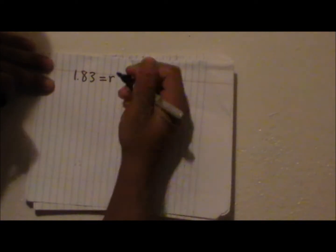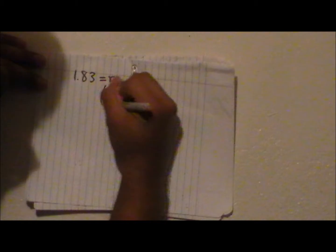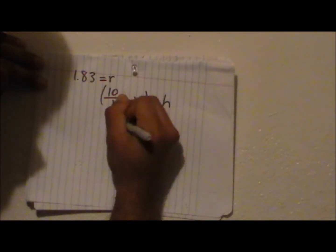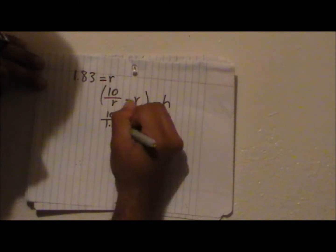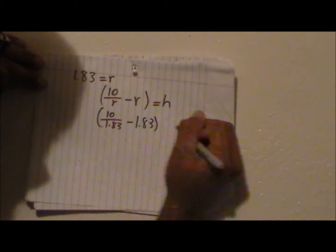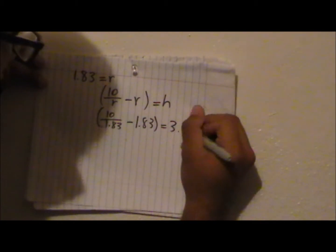Now that we know what r is, we can go ahead and go back to our formula for h, which if you recall was 10 over r minus r. And let's go ahead and plug that in, which is approximately 3.63.